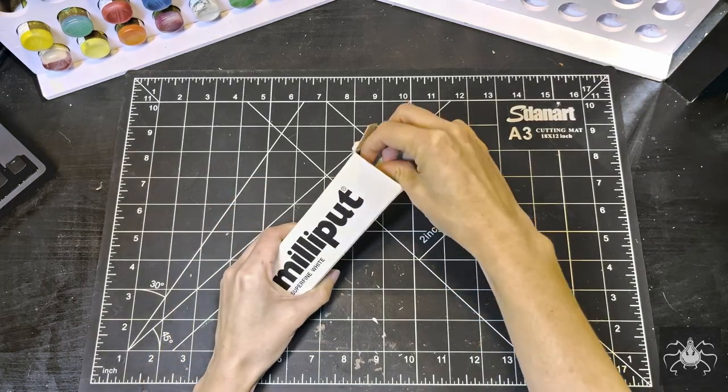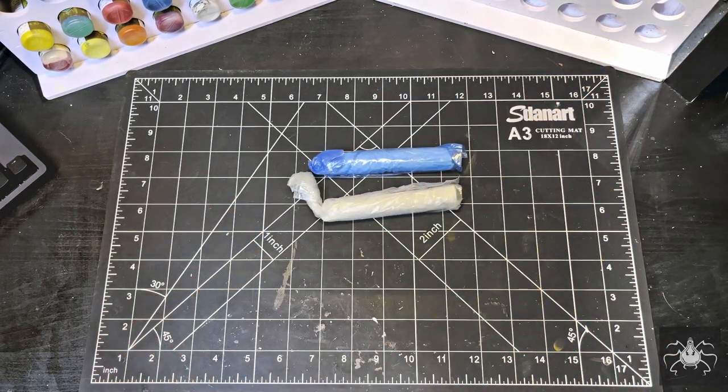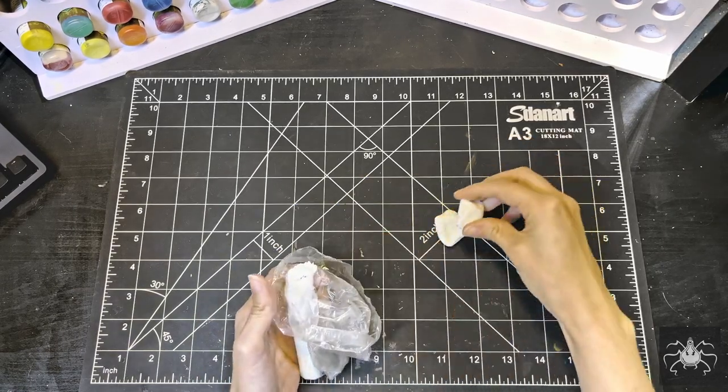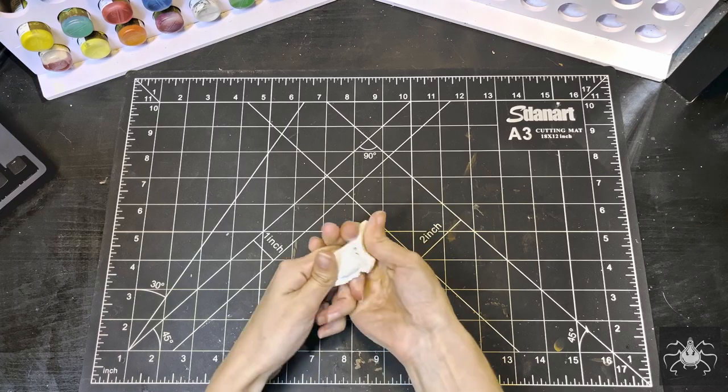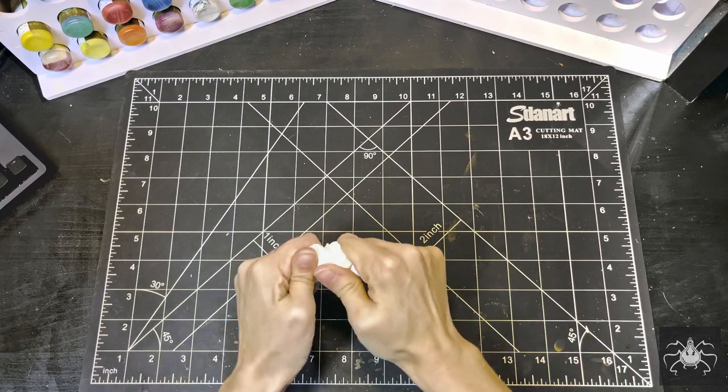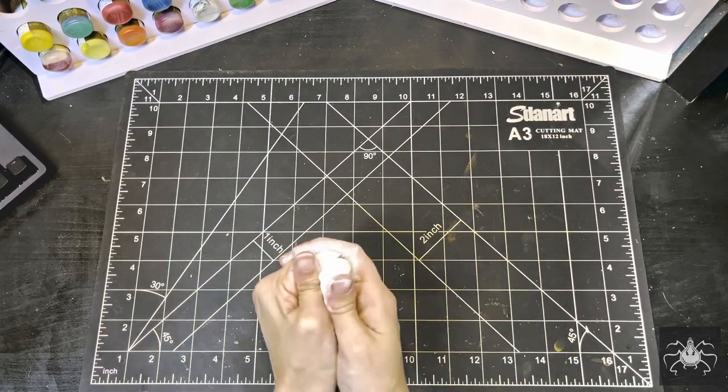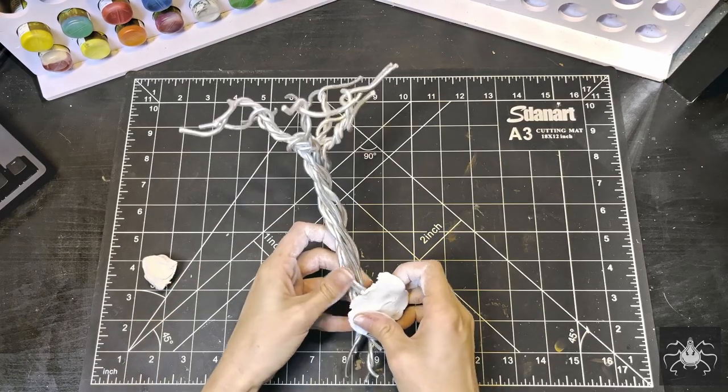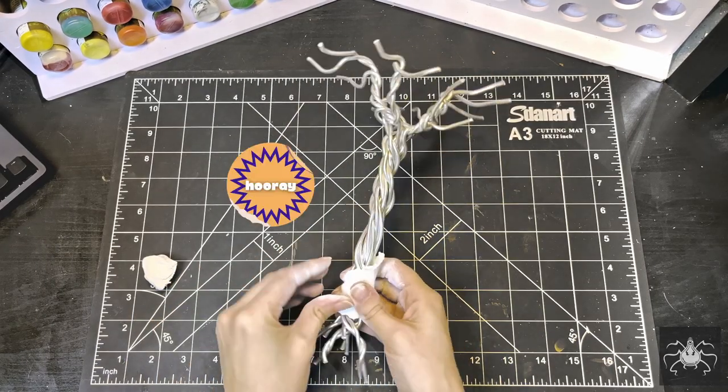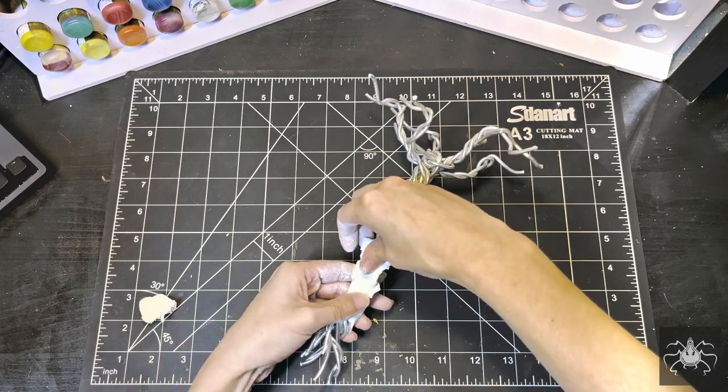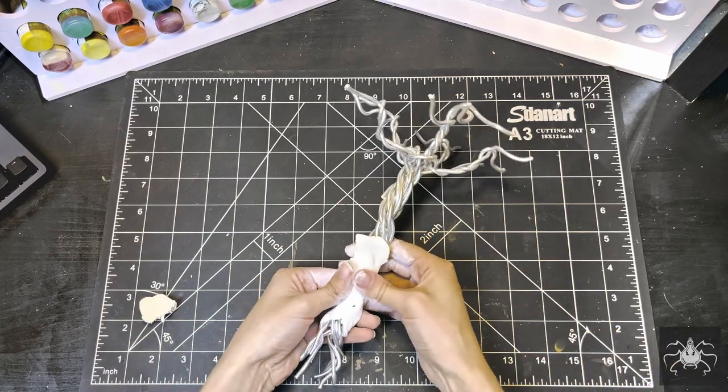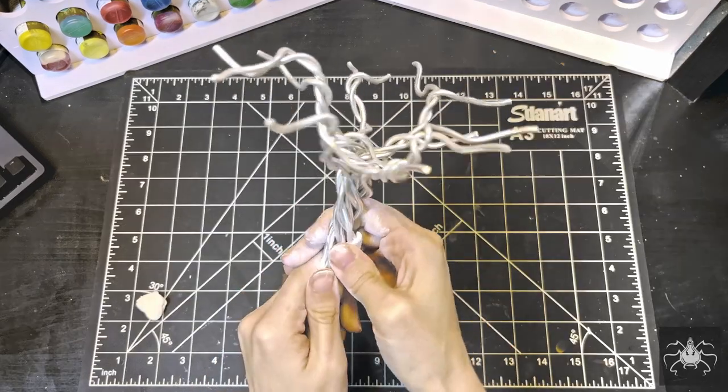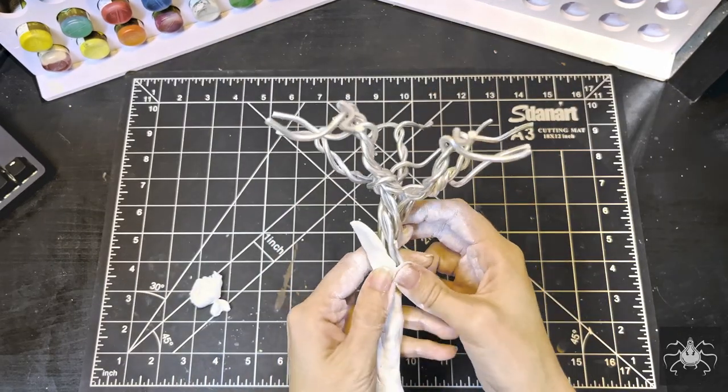Now, I'll be covering all the wire up with milliput. This two-part epoxy putty is one of my favorite materials to work with. It's easy to sculpt and carve detail into, it doesn't shrink, it can be sanded once cured, and unlike polymer clay, you don't have to bake it in the oven. Instead, as long as it's mixed together properly, this stuff fully hardens in just a few hours, allowing plenty of time to work with it if you know what you're doing.